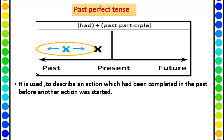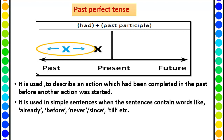Now past perfect tense. It is used to describe an action which had been completed in the past before another action was started. It is also used in simple sentences when they contain words like: already, before, never, since, and till.